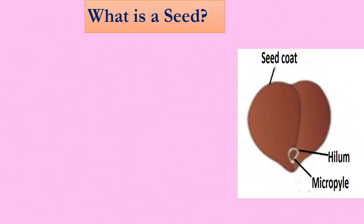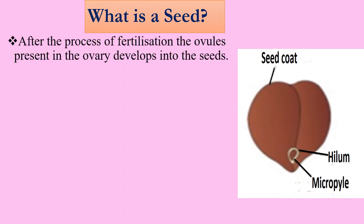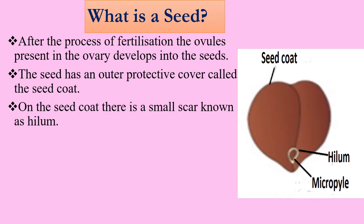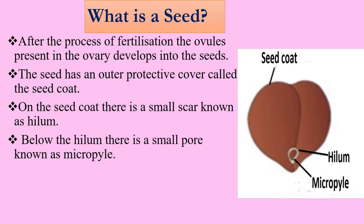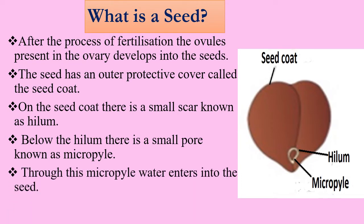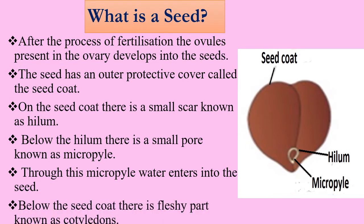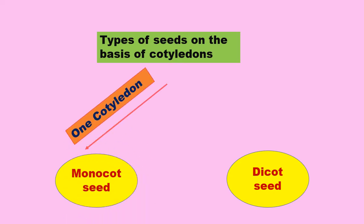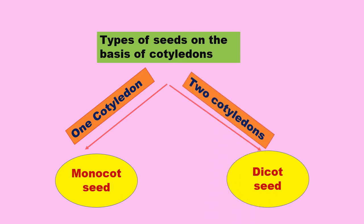After the process of fertilization, the ovules present in the ovary develop into seeds. The seed has an outer protective cover called the seed coat. On the seed coat there is a small scar known as the hilum. Below the hilum there is a small pore known as the micropyle. Through this micropyle, water enters into the seed. Below the seed coat there is a fleshy part known as cotyledons. Based on the number of cotyledons, seeds are of two types: monocot seed and dicot seed. A seed which has one cotyledon is known as a monocot seed; a seed which has two cotyledons is known as a dicot seed.